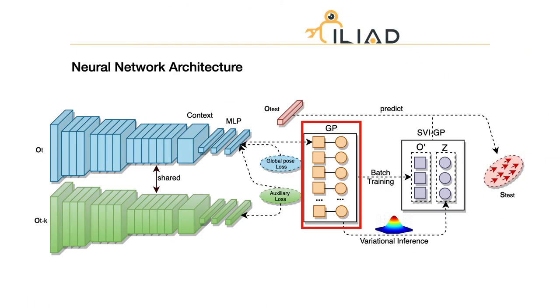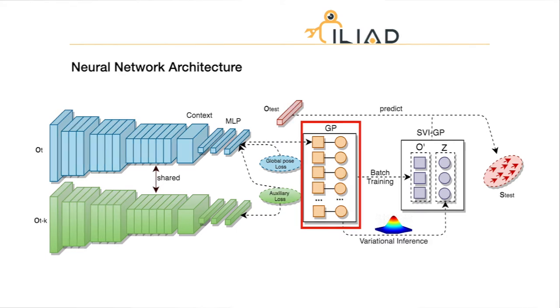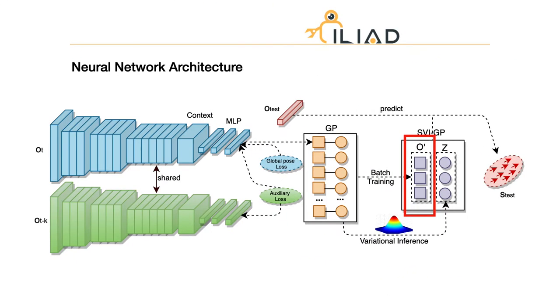The deep feature is used to build a kernel of the Gaussian process. For conventional Gaussian process, the computational complexity will increase exponentially with the number of training examples. To make the model scalable, we use sparse variational Gaussian process.